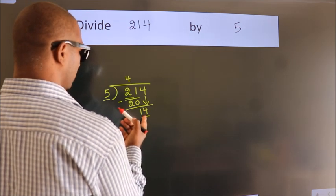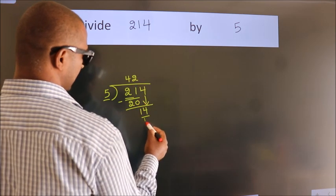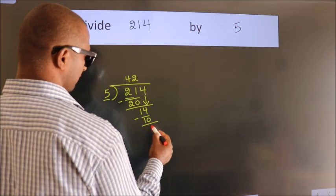A number close to 14 in the 5 table is 5 twos, 10. Now, we subtract. We get 4.